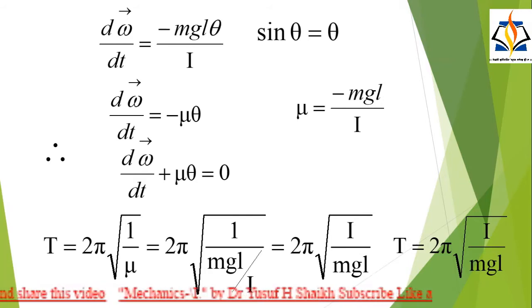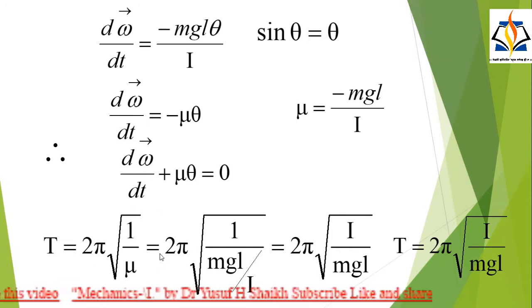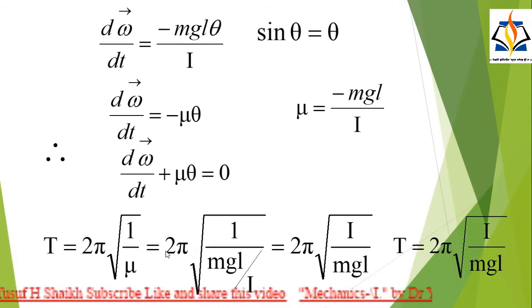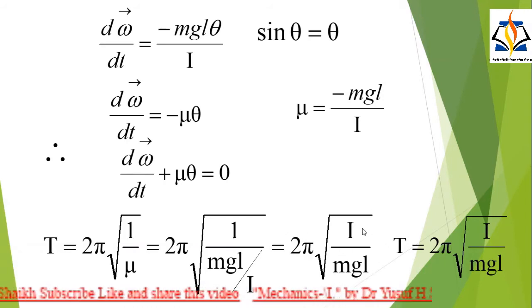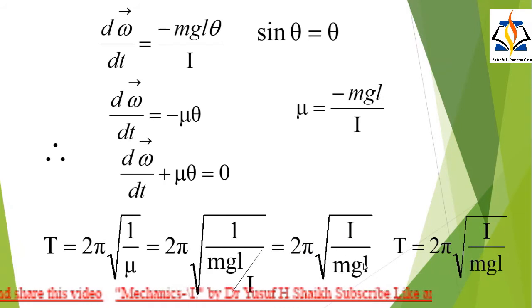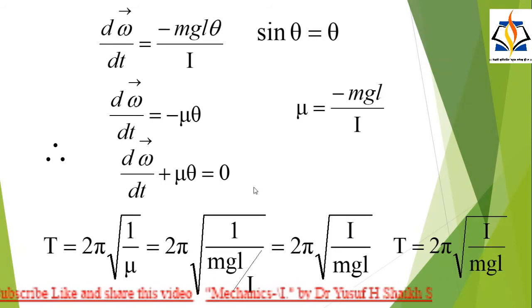The periodic time is T = 2π√(1/μ). Substituting μ = MgL/I, this becomes T = 2π√(I/MgL). That is, T = 2π√(I/MgL).